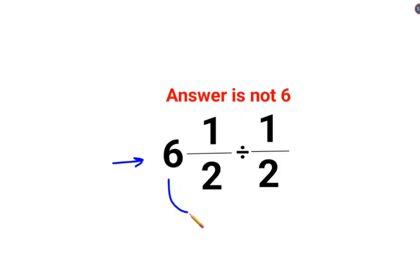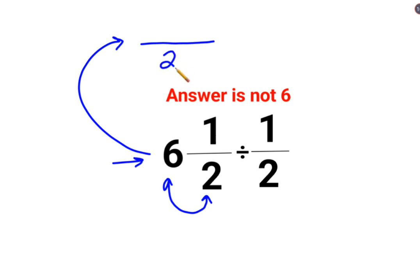This is called a mixed fraction. In order to do the division, first we need to convert this mixed fraction into an improper fraction. We continue to write the denominator as it is, but in the numerator, the denominator and the integer get multiplied. Whatever is the answer gets added to the numerator.